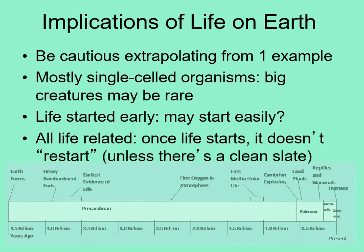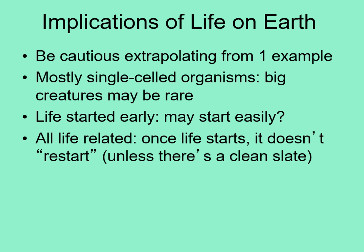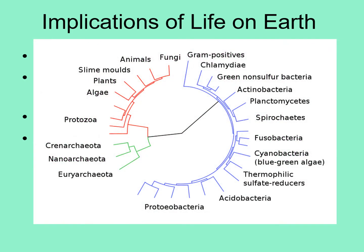Finally, all life on Earth is related — biologists can trace the genetic relationships between every species they've studied. This suggests that once life starts on a planet, it quickly takes over and makes it very hard for life to start again. This family tree of life shows the genetic relationships between major classes of living organisms and illustrates the fact that life has been single-celled for most of the Earth's history. The most basic divisions are all between single-celled organisms; all of the larger multi-celled plants and animals occupy just a couple of branches in the diagram.